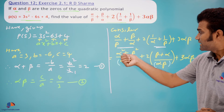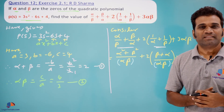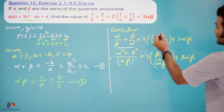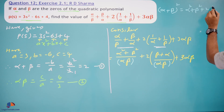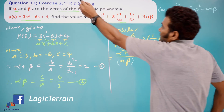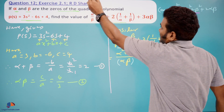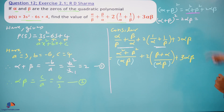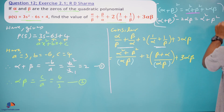We have alpha × beta, alpha + beta, and alpha × beta in our expression, but we need alpha² + beta². We don't have this directly, so we use an algebraic identity: (alpha + beta)² = alpha² + beta² + 2(alpha × beta). Rearranging: alpha² + beta² = (alpha + beta)² − 2(alpha × beta). We'll use this identity to replace alpha² + beta² in our expression.